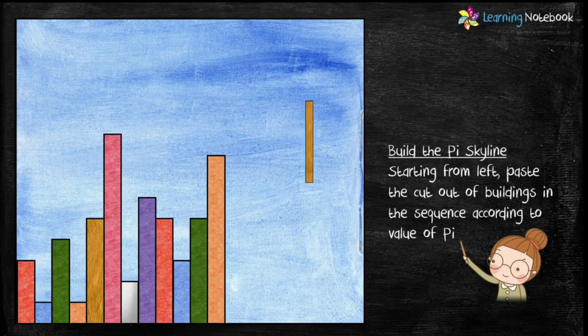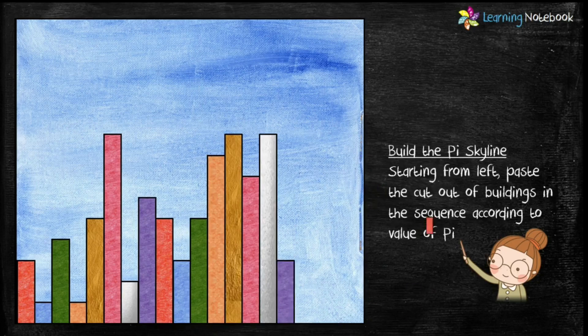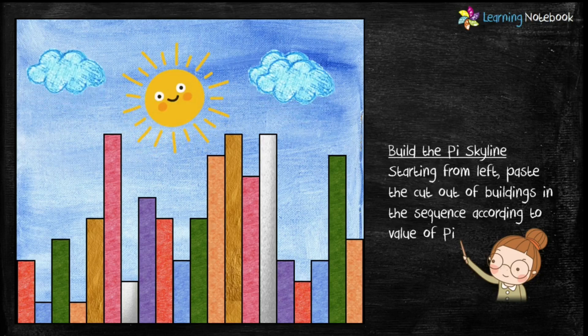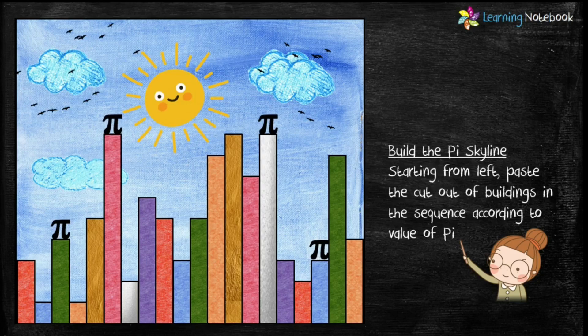Now students, draw a sun, some clouds, and few birds. Also draw a pi symbol on the top of some of the buildings as it is a pi skyline. So this is the lovely pi skyline with a beautiful backdrop of sunshine.